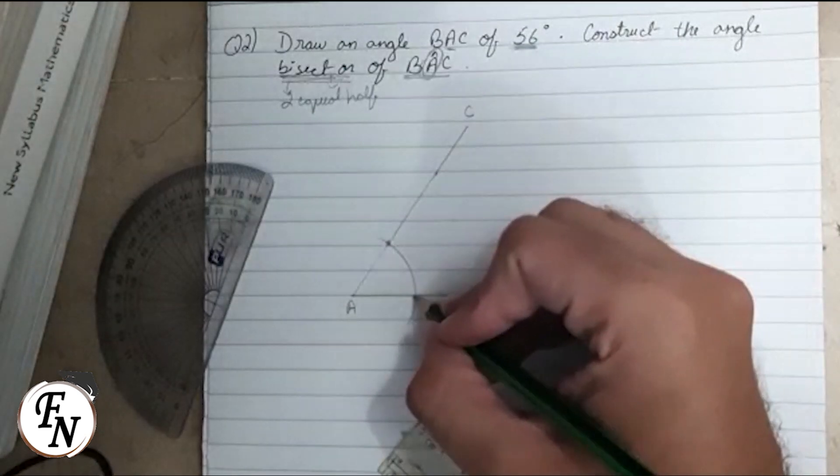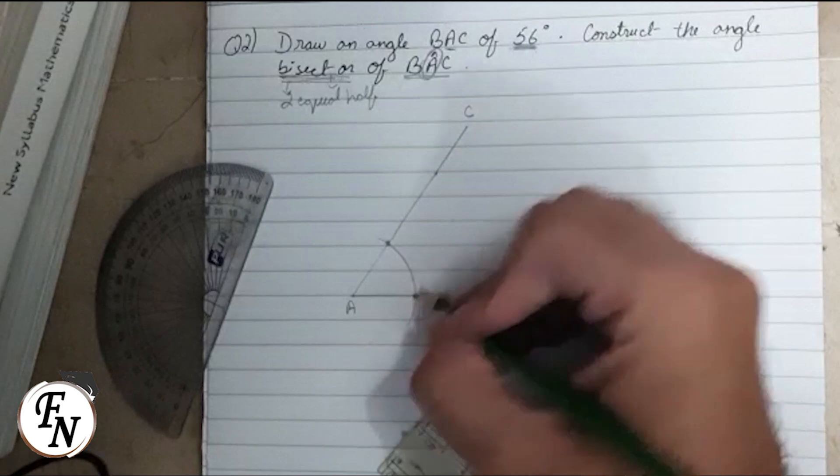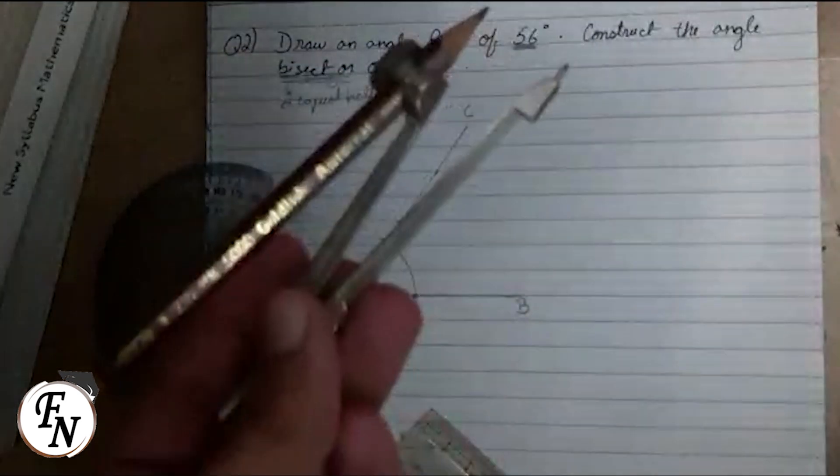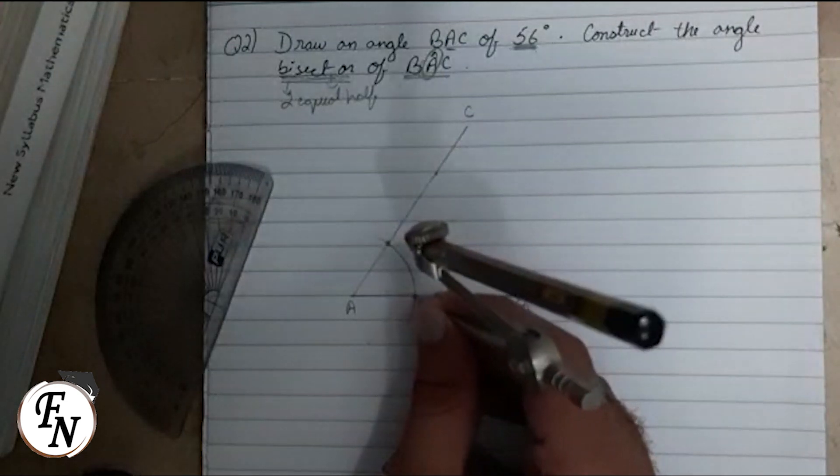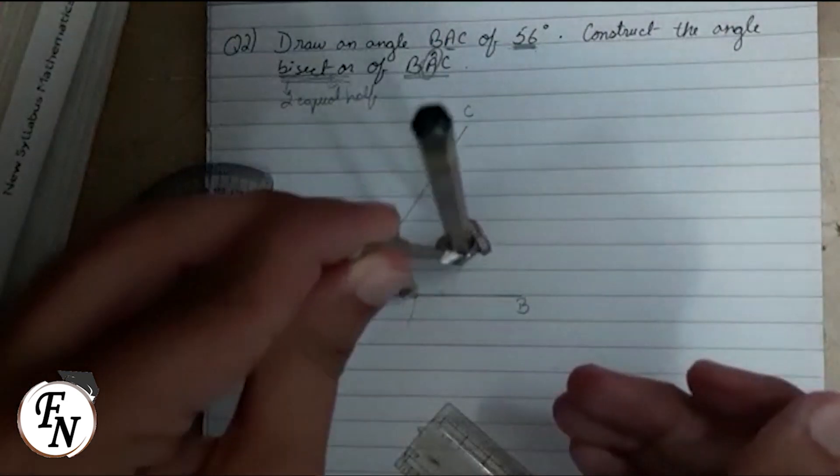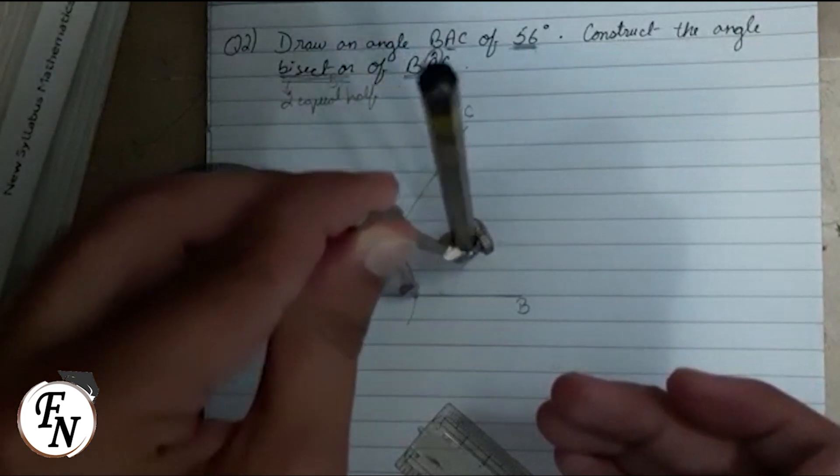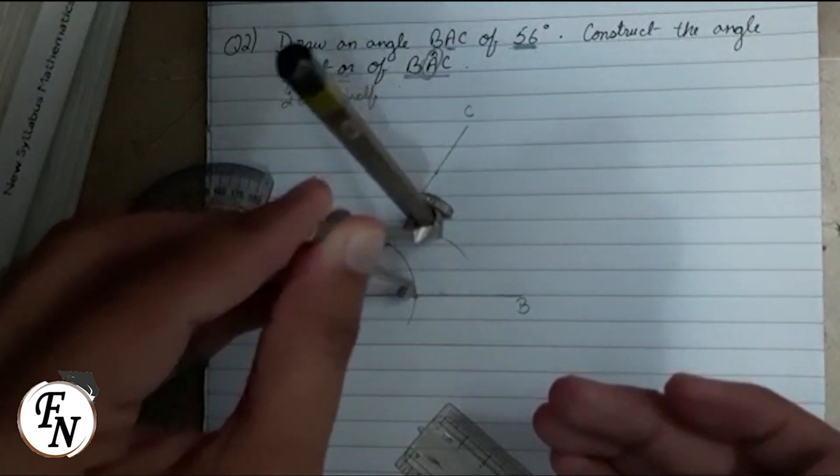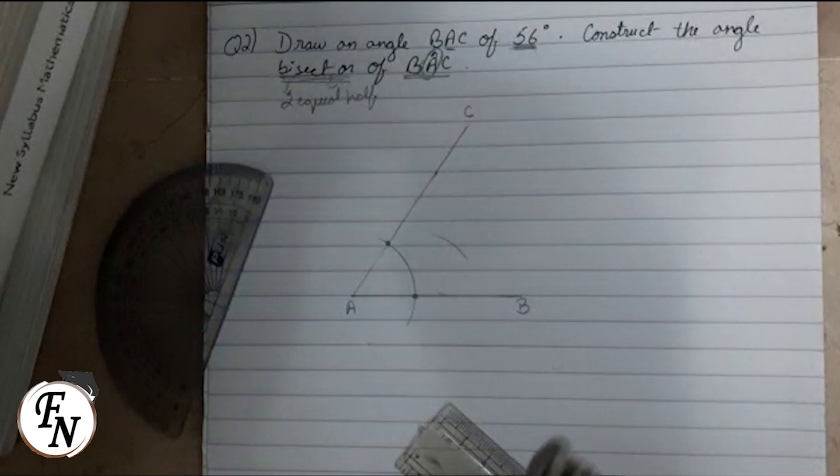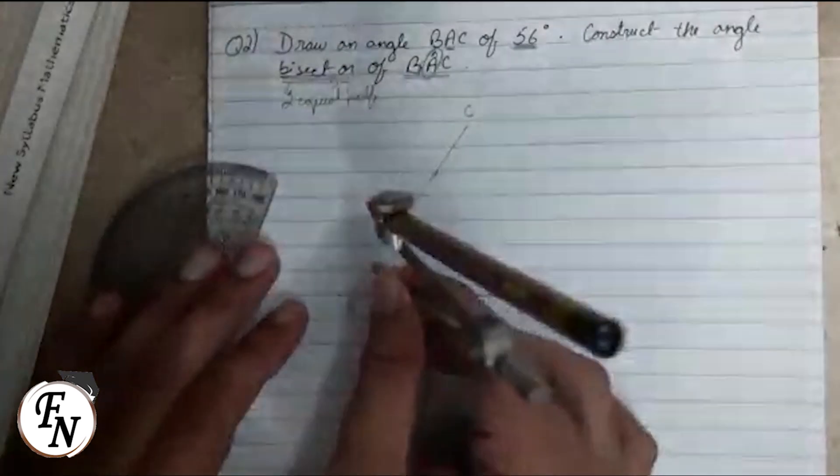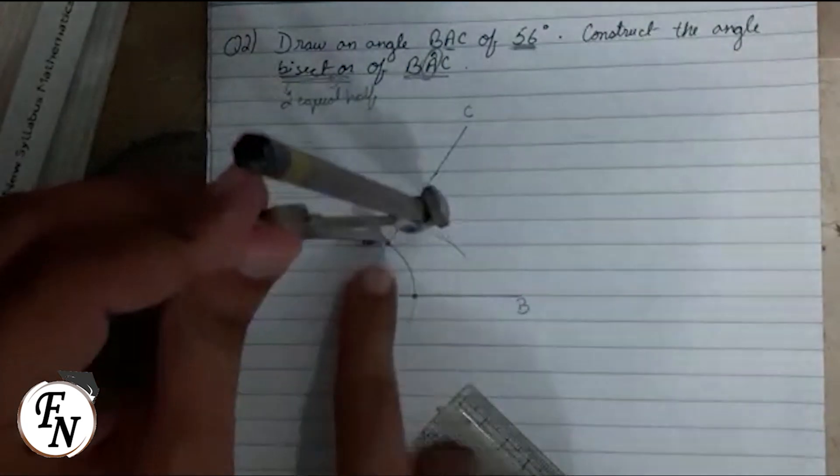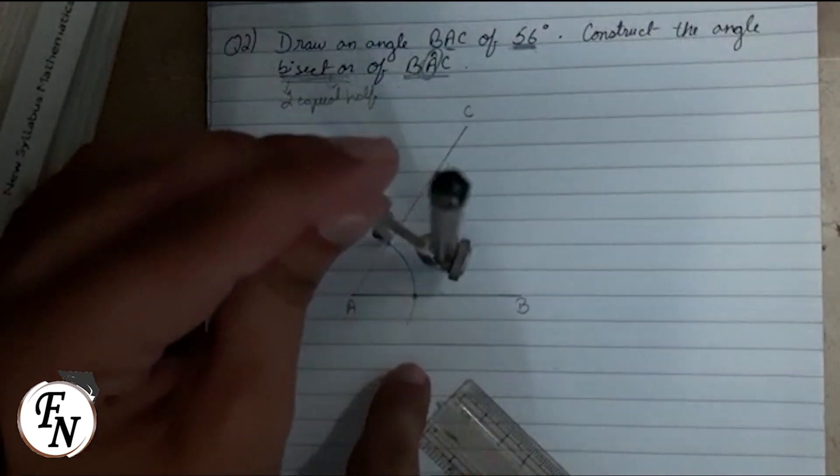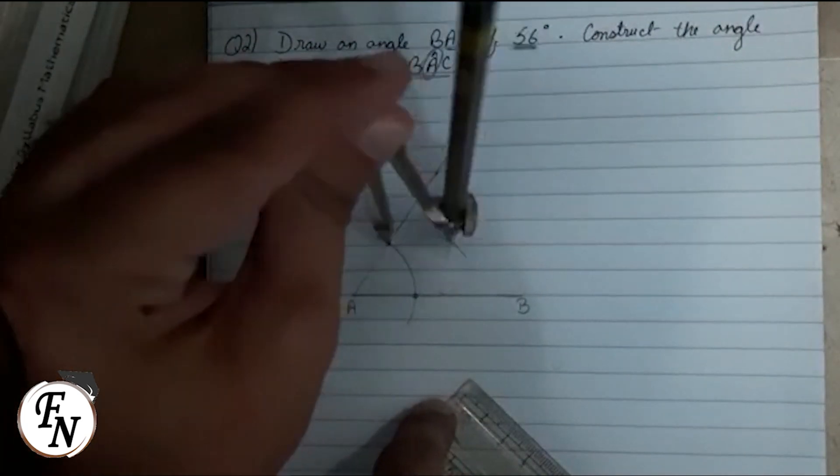Now with the same radius, first keep it at one point on AB and draw an arc inside the angle. Then with the same radius, keep it at the point on line AC where we cut it earlier, and then cut this previous arc.